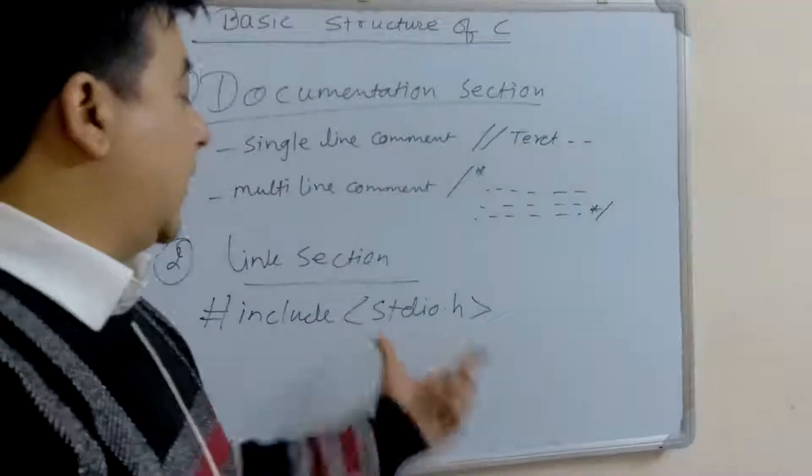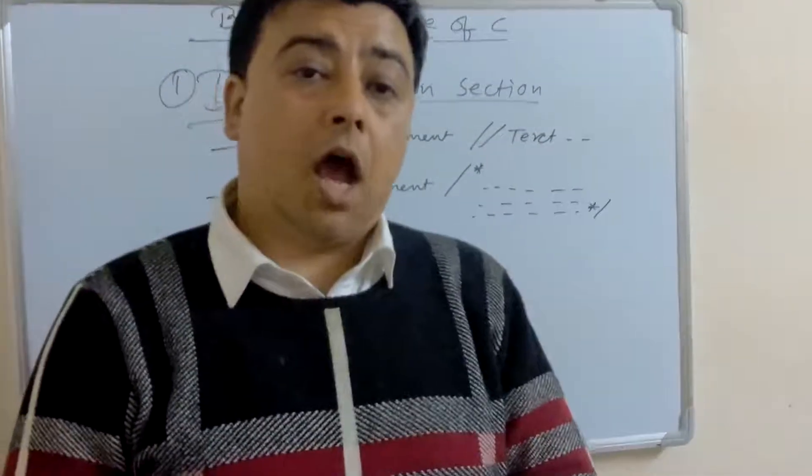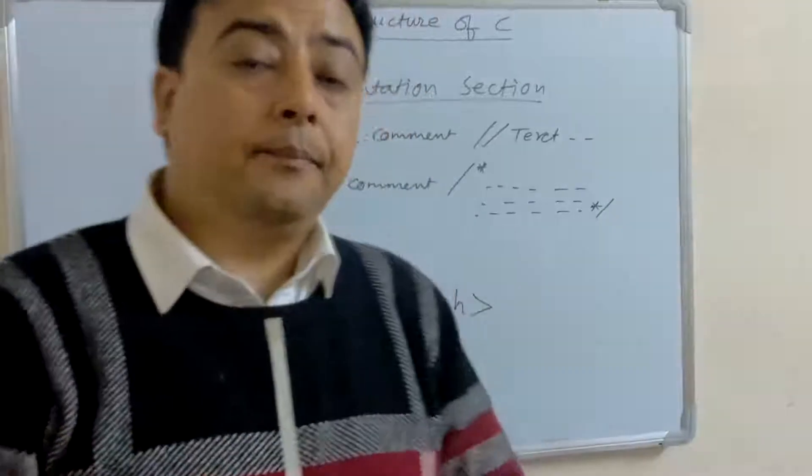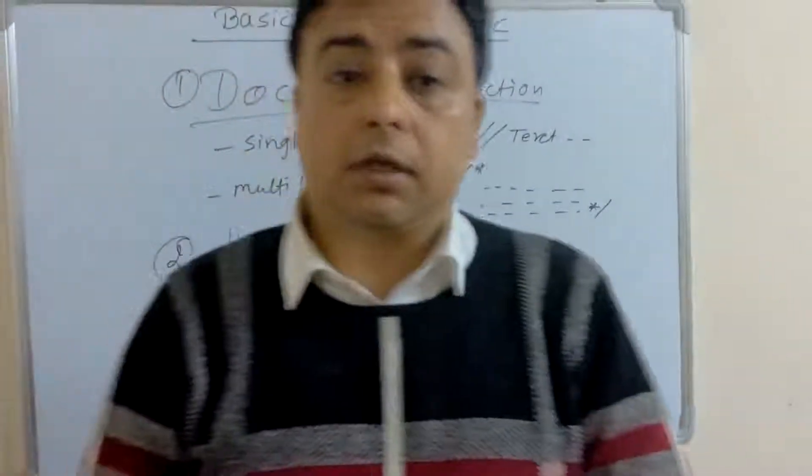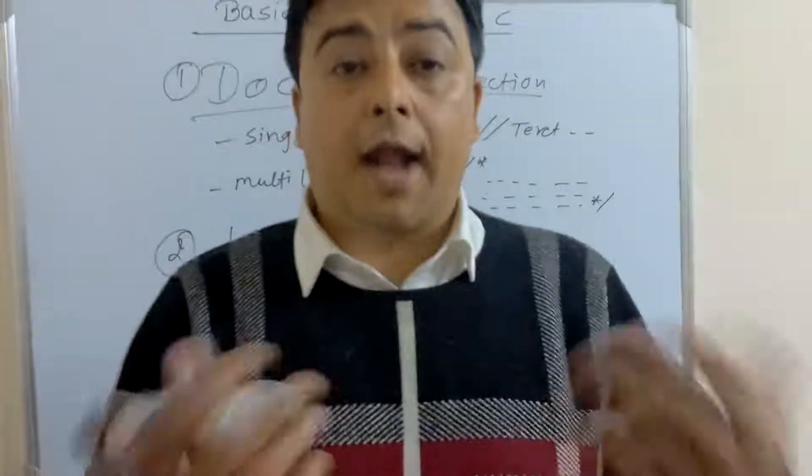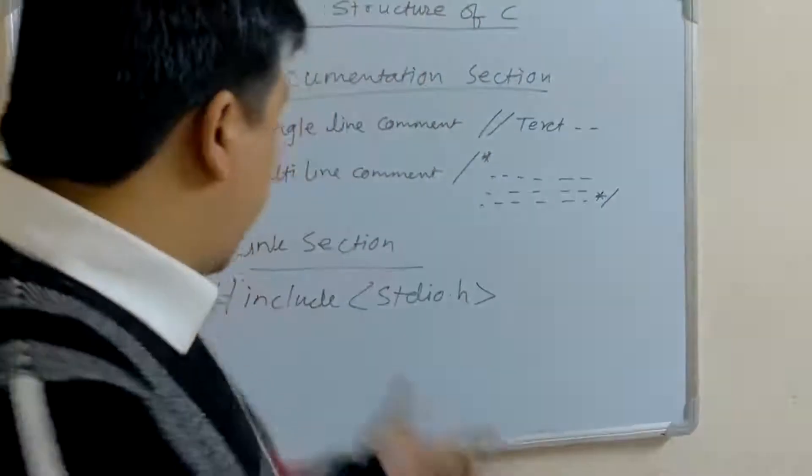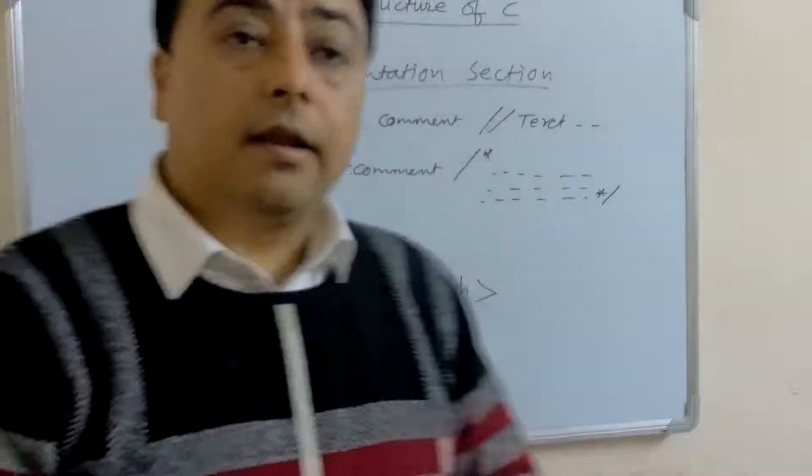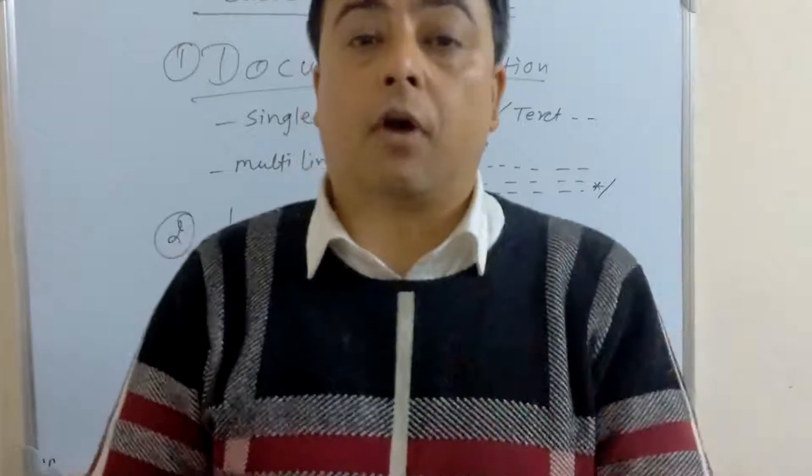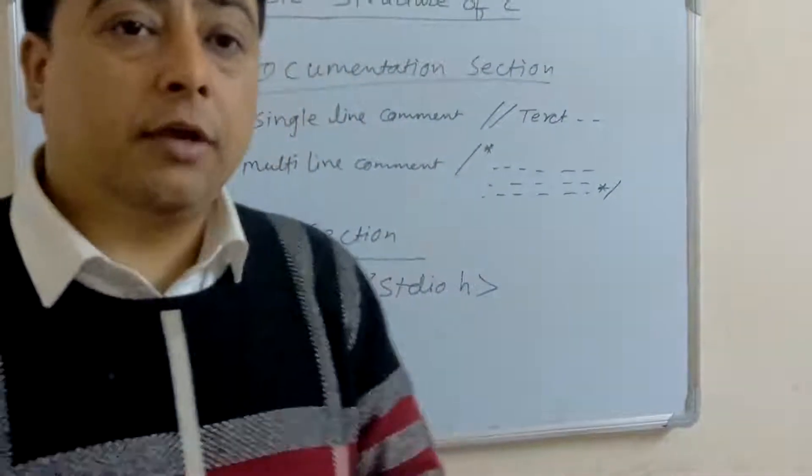The most common use header file in C program is #include stdio.h. This stdio.h is used for input and output. For math functions, we use the header file math.h. For graphics, we have to use graphics.h. This link section is used for the header files that are included in C program.